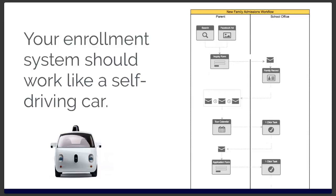We build these systems custom for all our clients because everyone's process is slightly different. At a high level: they click on the Facebook ad — or maybe come from a Google search — they come to the landing page, fill out the inquiry form, and then immediately the admissions director gets a notification and a record is created in a database automatically. At that point, the parent gets what we call a drip sequence of emails, spread out over days, weeks, or months — pre-written emails personalized to that parent by name.